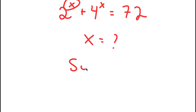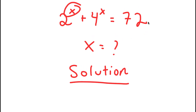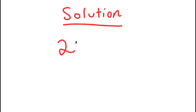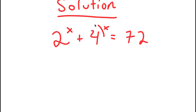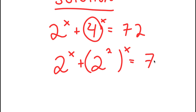For the solution, I'm first going to rewrite my equation down here so I have more space. I have 2 to the power of x plus 4 to the power of x is equal to 72. To solve this, I'm first going to rewrite 4 as 2 squared. Now I get 2 to the power of x plus 2 squared to the power of x is equal to 72.